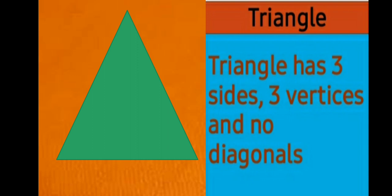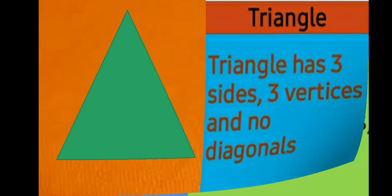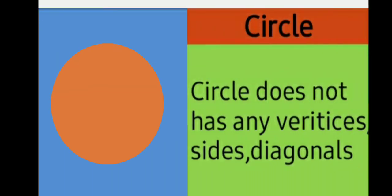Coming to the triangle — a triangle has 3 sides, 3 vertices and no diagonals, as a triangle does not have corners where we can join the opposite vertices. Coming to the circle — a circle does not have any vertices, sides or diagonals, because it does not have any sides, so it has no vertices and no diagonals.